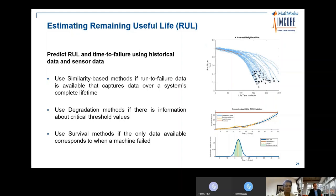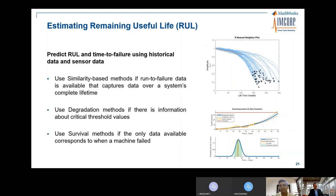Once predictive maintenance algorithms are built, you can go beyond predictive maintenance to identify the remaining useful life of equipment — knowing well in advance how much life remains so you can plan replacements ahead of time. To develop remaining useful life algorithms, multiple methods exist: narrative-based methods using run-to-failure data captured over a system's lifetime, degradation methods using threshold values, or survival methods using data from failed machines.